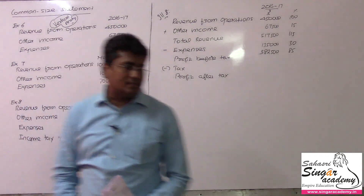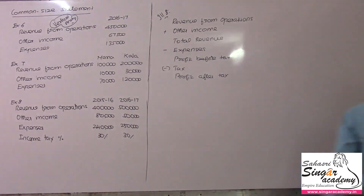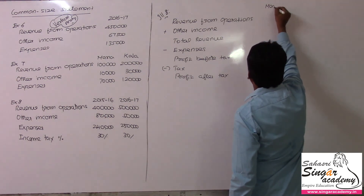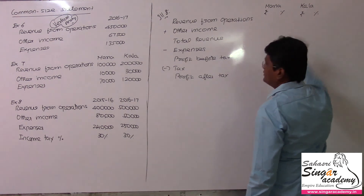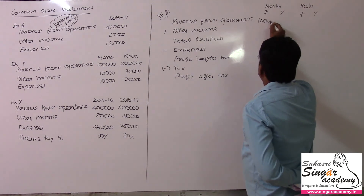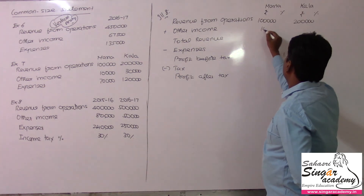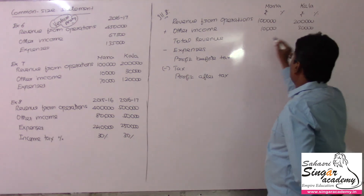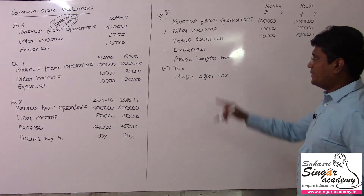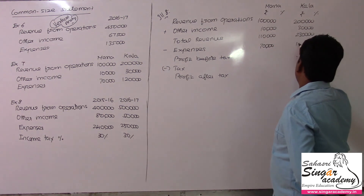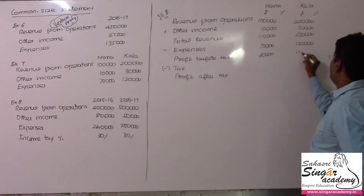Now we move to exercise number 7. Exercise number 7 involves all pass entries. We need 4 columns here. The revenue values are 1 lakh and 2 lakhs, other income 10,000 and 30,000, totals being 1 lakh 10,000 and 2 lakhs 30,000. Expenses are 70,000 and 1 lakh 20,000. Profit before tax will be 40,000 for Maria and 1 lakh 10,000 for Kala.